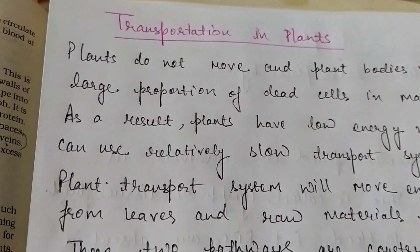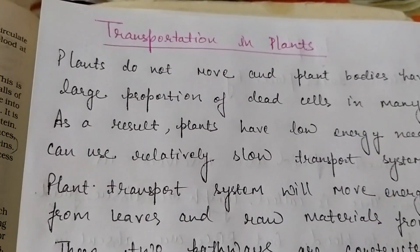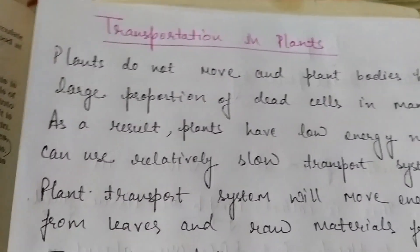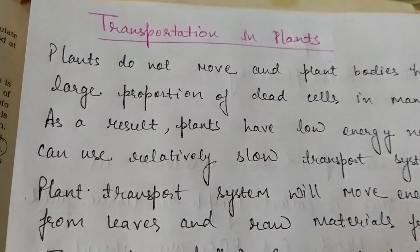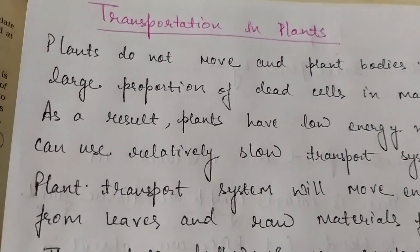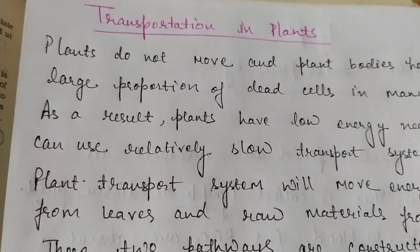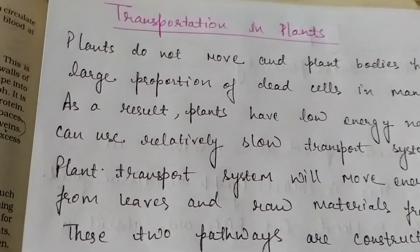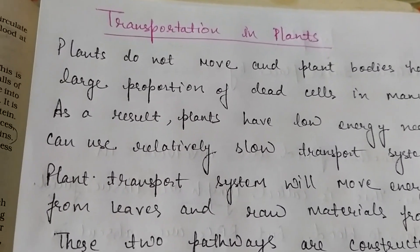Now, if the distance between the soil-contacting organ and the chlorophyll-containing organ is small — for example, between roots and leaves — then diffusion can easily move raw materials and energy. But if the distance becomes large because of change in plant body design, and leaves are very far from the roots, then the diffusion process will not be sufficient to provide raw materials to the leaves. So diffusion alone is not sufficient, and a separate proper transportation system is needed.